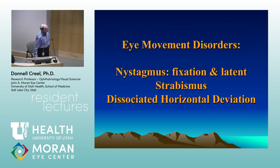Most albinos almost all have nystagmus, but there are no absolutes. I saw a fellow here within the last couple of years who was 40 before he found out he was an albino. He had 20/25 vision and no observable nystagmus, but his OCT showed a fovea as flat as a mouse.